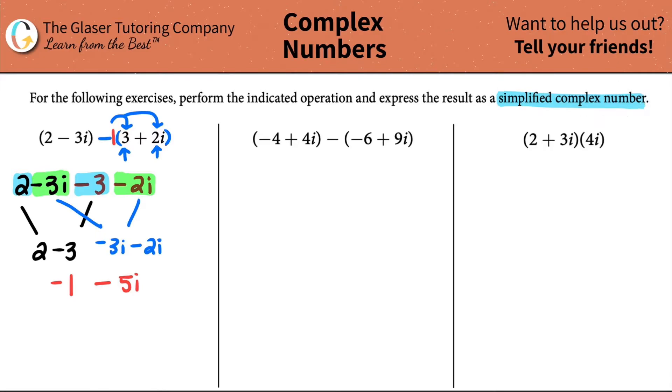Now we just have to clean this up. Simplified complex number is when we have a real value in the front. A real number is just the number, so two, three, four, negative two, negative three, negative four. And then we have our imaginary number. The imaginary number is the one that has the i in it. So the real number always comes first and then the imaginary. Basically this is the answer. I have my real number in the front, negative one, and then I have my imaginary value at the end, minus five i. That's it for the first one.